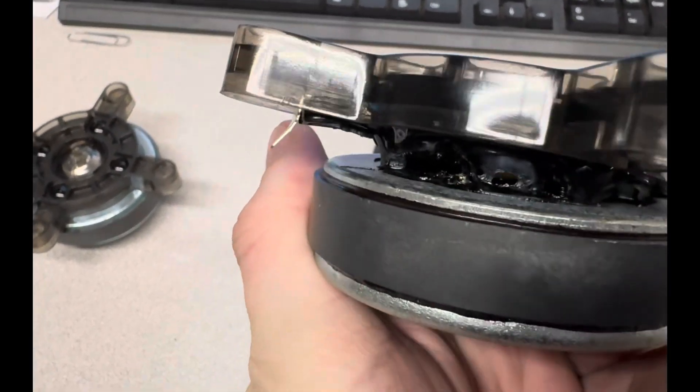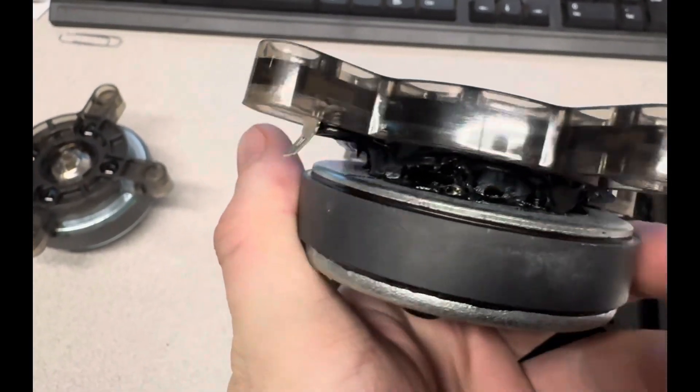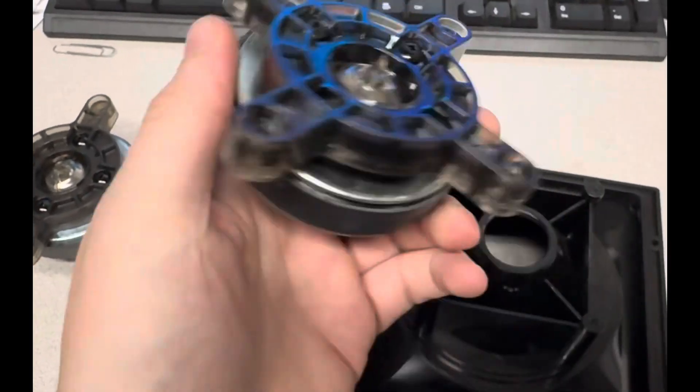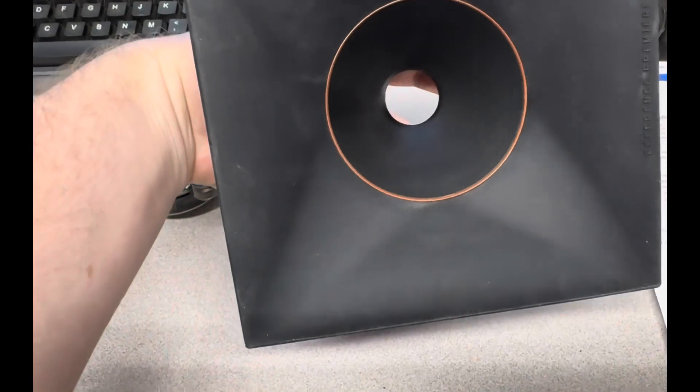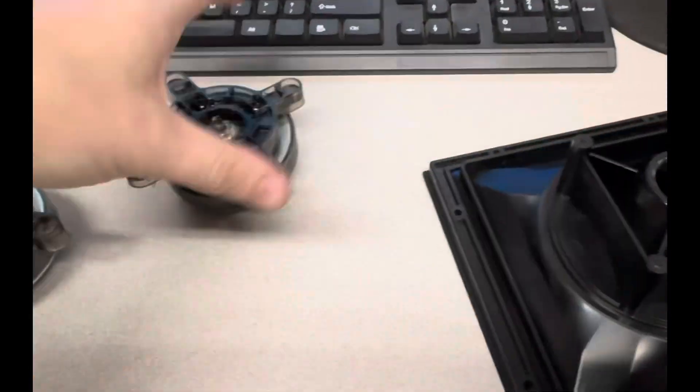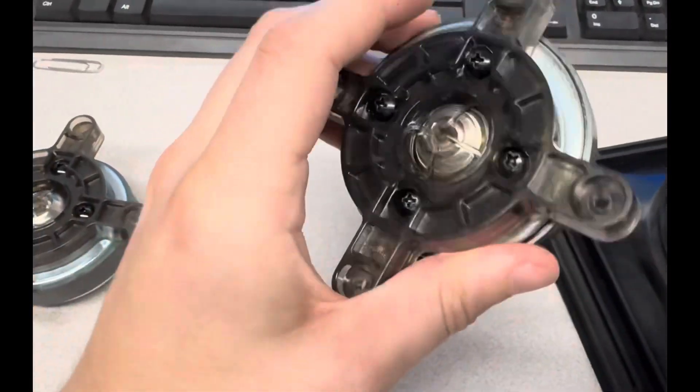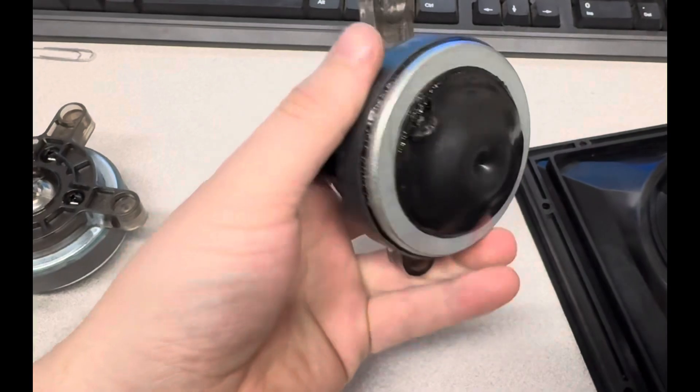But yeah, you can see that got really, really hot. When we first got the cabinet in, this horn thing, you could see there was all ferrofluid leaking down there, which is what they put in some dome tweeters just to keep them running a little cooler.